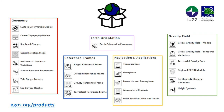The geodetic products available at the GGOS website range from Earth orientation parameters to reference frames, and cover, among others, the Earth's gravity field, the height system, sea level changes, land surface deformation, the atmosphere and satellite orbits.